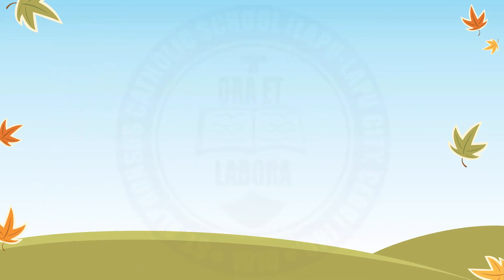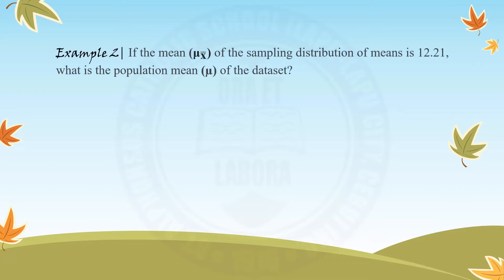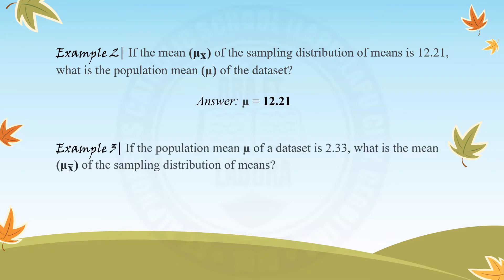Now that we know the concept of the equality of the population mean and the mean of sample means, let us apply it in these examples. If the mean of the sampling distribution of means is 12.21, what is the population mean? The answer is 12.21. If the population mean of a data set is 2.33, what is the mean of the sampling distribution of means? The answer is still 2.33, because of the equality of the population mean and the mean of sample means.